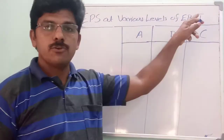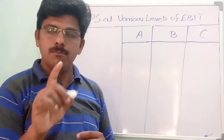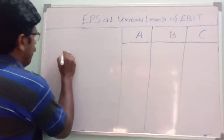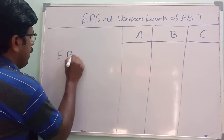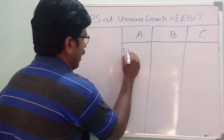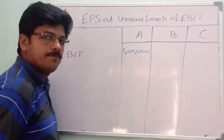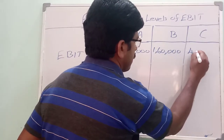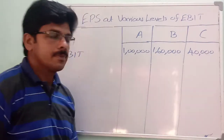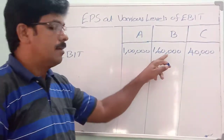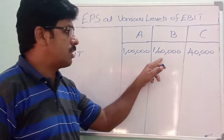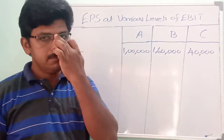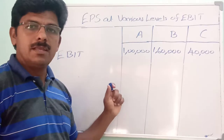We will calculate EPS at various levels of EBIT. Plan 1: EBIT is 1 lakh. Plan 2: EBIT is 1 lakh 60,000. Plan 3: EBIT is 40,000. EBIT means earnings before interest and tax. Let us see how it functions across these three cases.